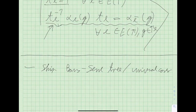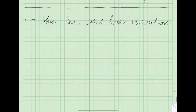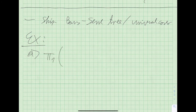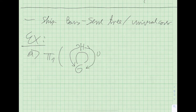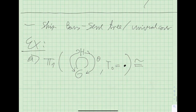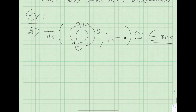In the interest of time, I will skip the description of the Bass-Serre tree — a tree you construct from a graph of groups on which the fundamental group acts — and instead give some examples. If we look at the fundamental group of a loop of groups — one vertex group G and one loop edge with edge group H, inclusion one way and theta the other way — the fundamental group of this graph of groups is precisely the HNN extension.